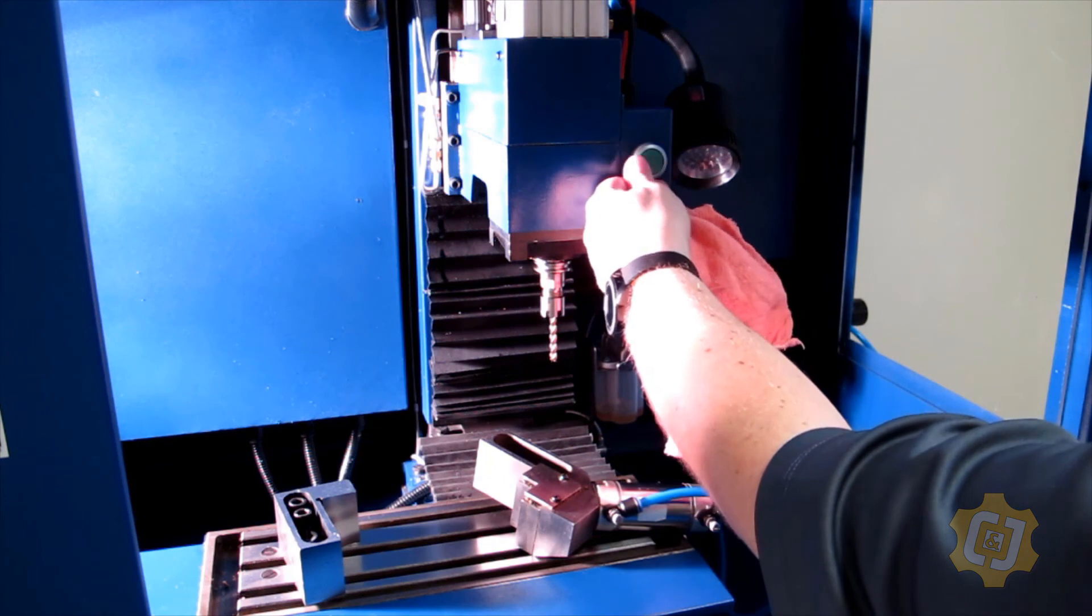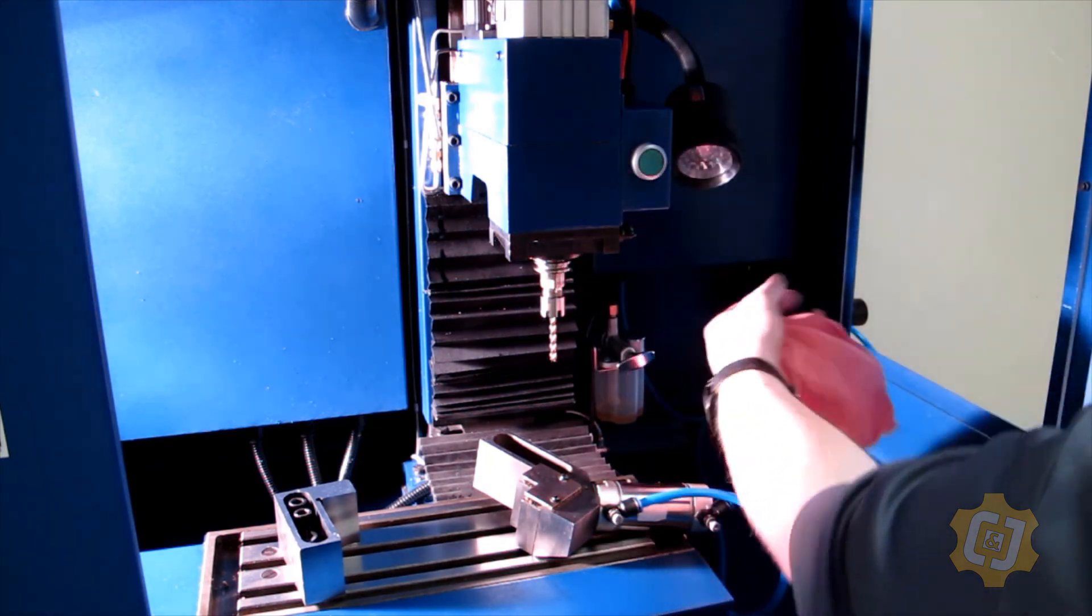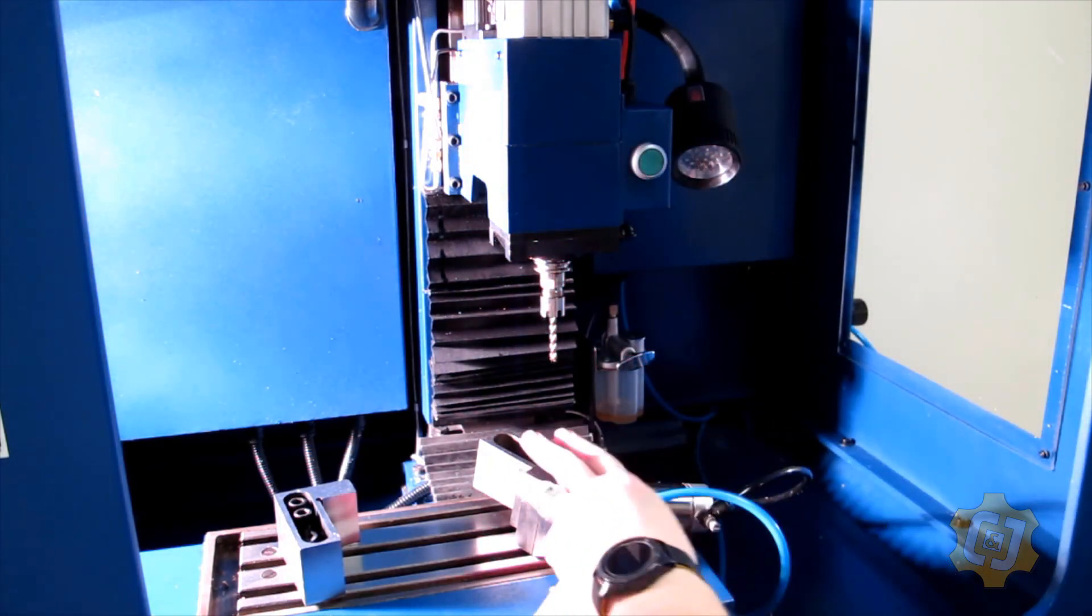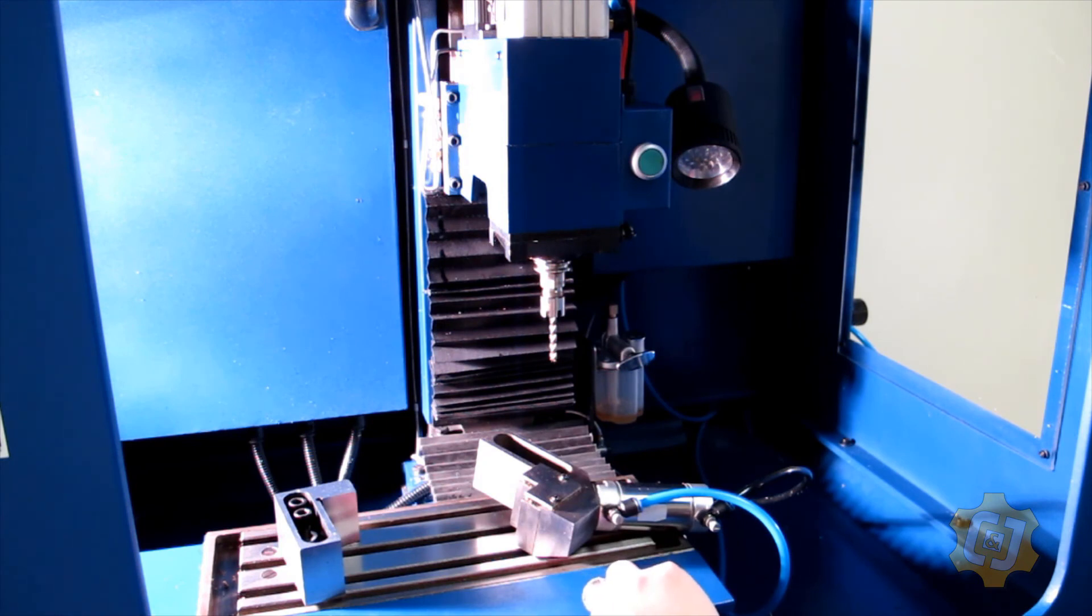And that's really it for the inside of the machine. I have the control of the drawbar, I have a light, I have my one-shot oiling system, and currently right now I have my vise, which I'll show you how to install in another video. So that's really it for the tour of the Benchmill 6000 series.